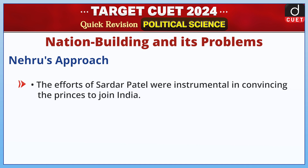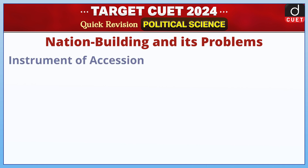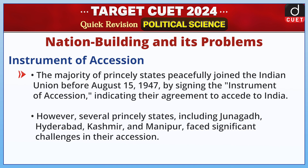The efforts of Sardar Patel were instrumental in convincing the princes to join India. The majority of princely states peacefully joined the Indian Union before August 15, 1947, by signing the Instrument of Accession, indicating their agreement to accede to India. However, several princely states, including Junagadh, Hyderabad, Kashmir, and Manipur, faced significant challenges in their accession.